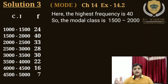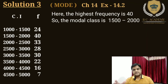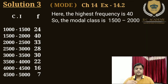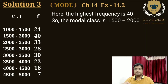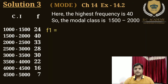Jab humne highest frequency se modal class nikali, phir hum F1, F0, F2, L aur H nikaalenge. Jo highest frequency hoti hai wahi F1 hota hai, toh F1 kya hoga? 40. F1 ke theek upar ki frequency ko F0 kaha jaata hai, toh F0 kya hoga? 24.